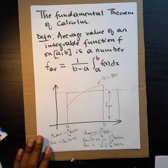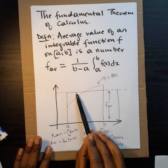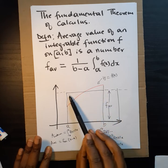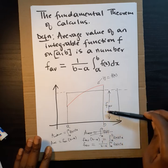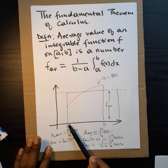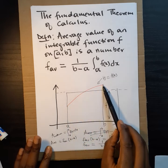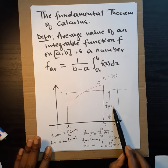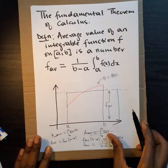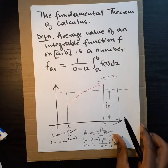Basically, this definition tells us that somewhere between a and b we can draw a horizontal line forming a rectangle whose height, when multiplied by the length of [a, b], gives an area equal to the area under the curve. This number is called the average value of our function, and it leads us to the mean value theorem for integrals.